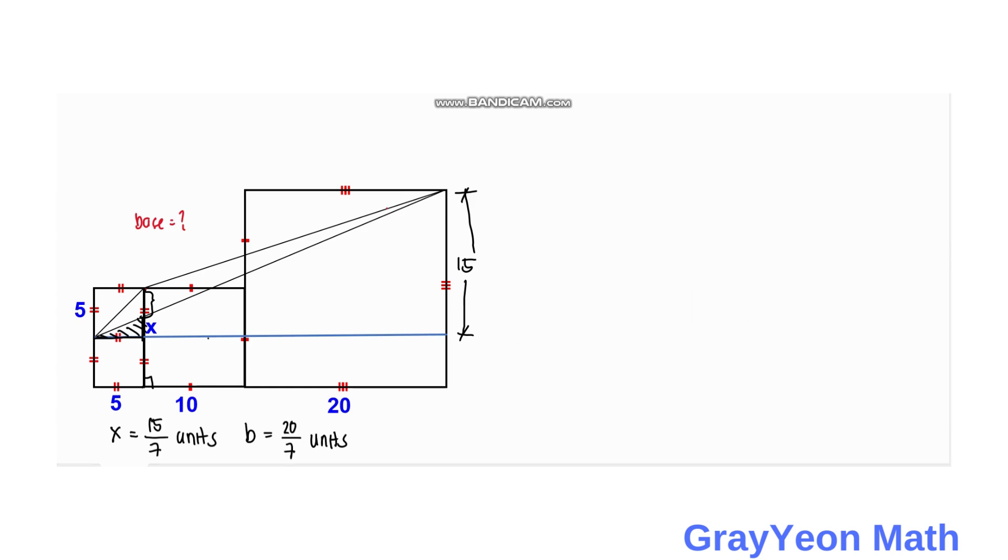Now finally, to calculate the area of this triangle that we desire to get, area is equal to this first triangle which has a base of 20 over 7 and the height of 10 plus 20, which is 30. So we have one-half times 20 over 7 times 30.